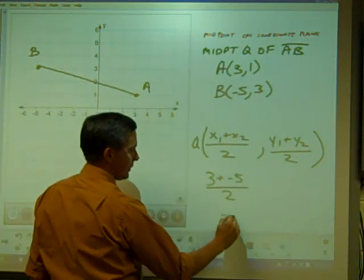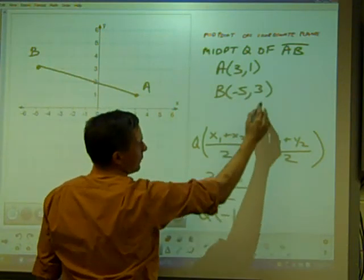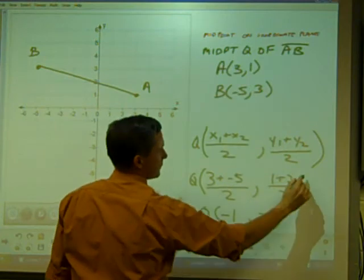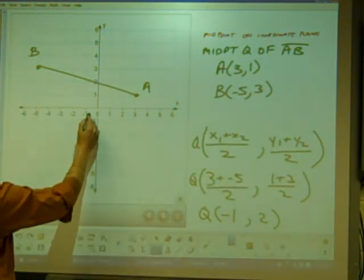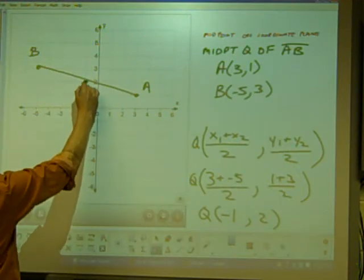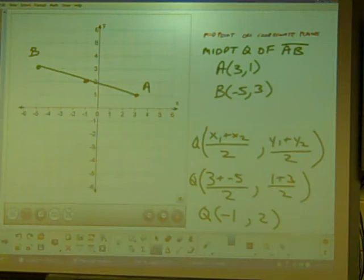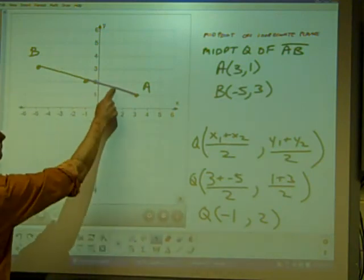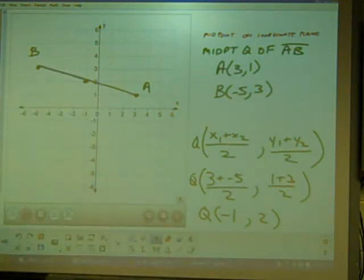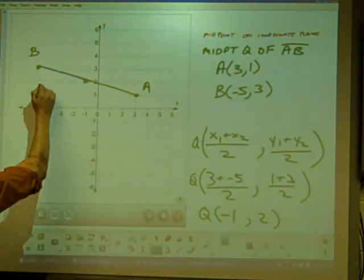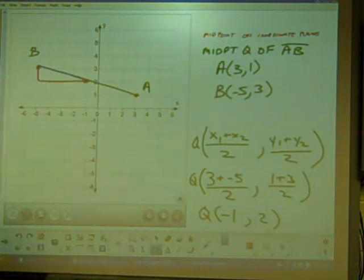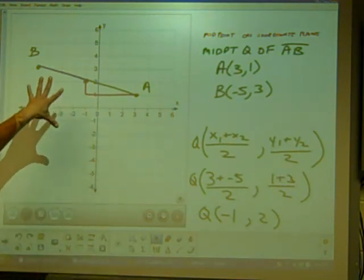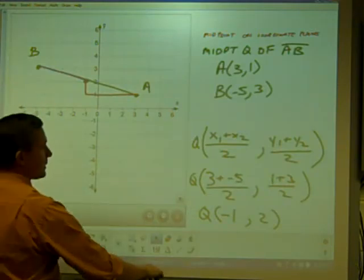Negative 2 over 2 is negative 1. Y coordinates: 1 and 3, 4 over 2 is 2. So negative 1, 2. And my drawing might not be perfect, but it's close enough. Here's the cool thing to notice: we know this distance has to be the same as that distance. Also, because the hypotenuse of a right triangle is the same in this case, the right triangle legs also have to be the same. So we got this every time.